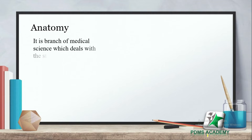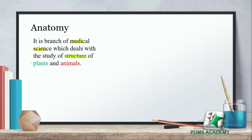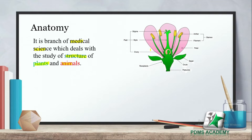What is anatomy? It is a branch of medical science which deals with the study of the structure of plants and animals. For example, a flower has structures such as stigma, style, and ovary.